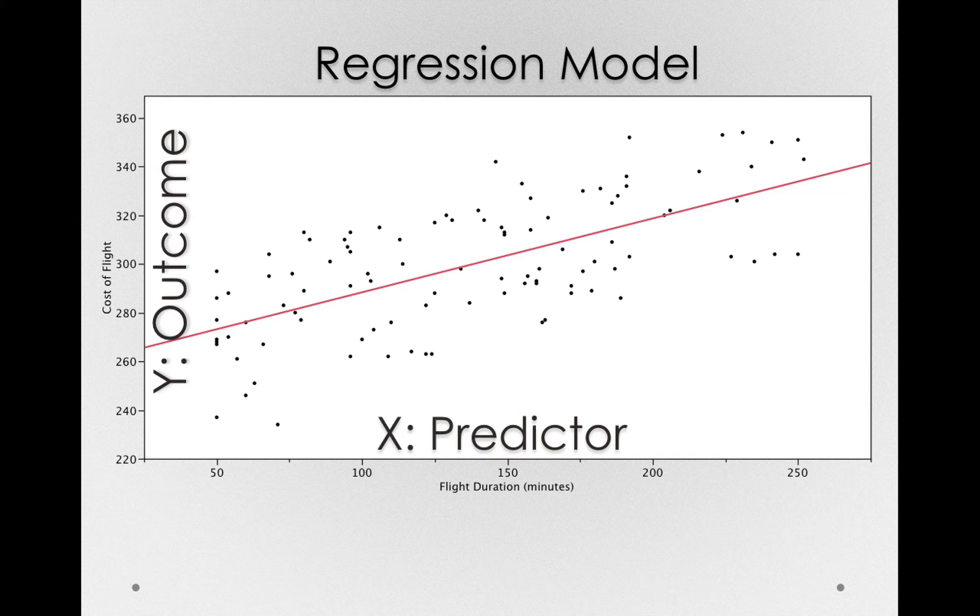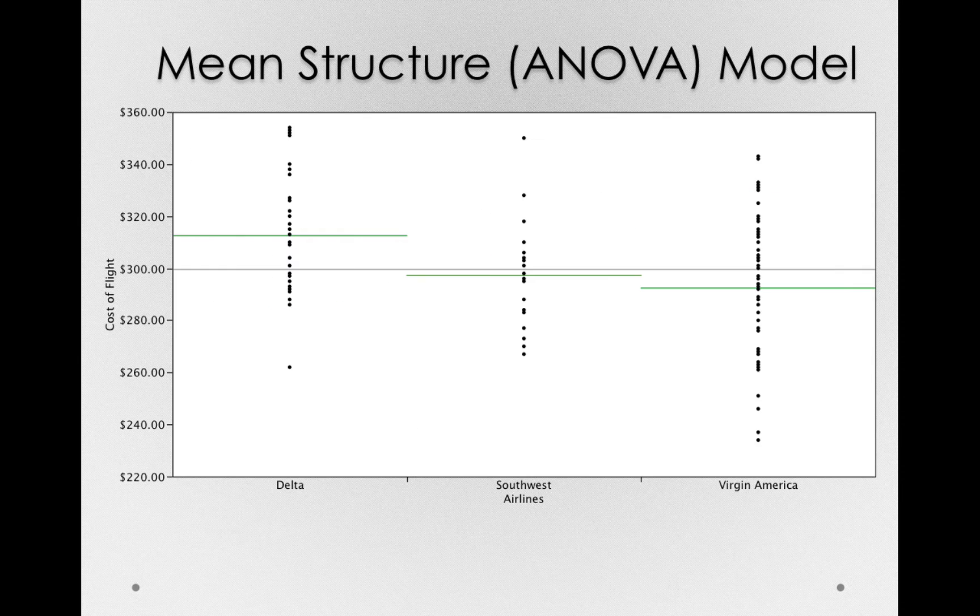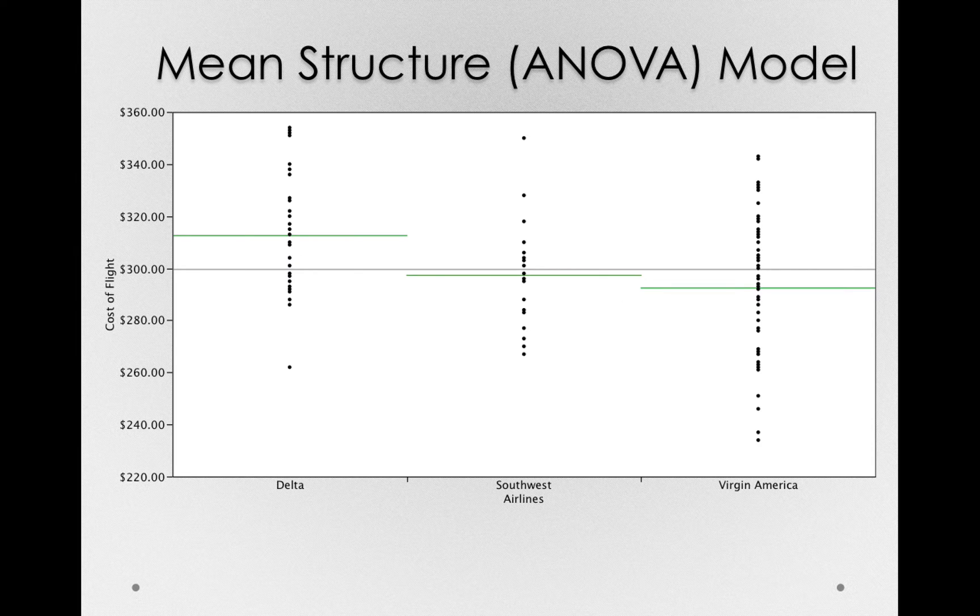Now the other type of model is a mean structure model, like we saw when we had the different groupings. The technique we'll use to analyze these is known as an ANOVA, an analysis of variance, so often we call these ANOVA models.